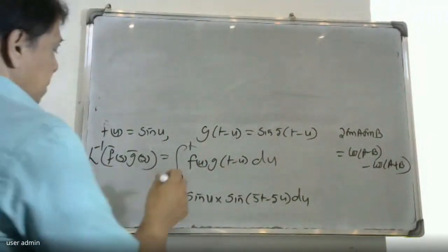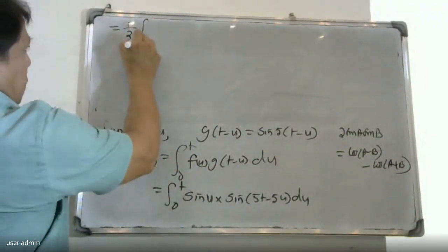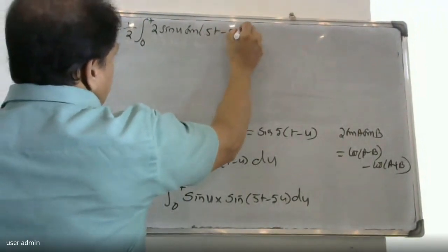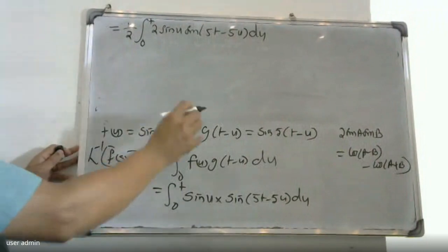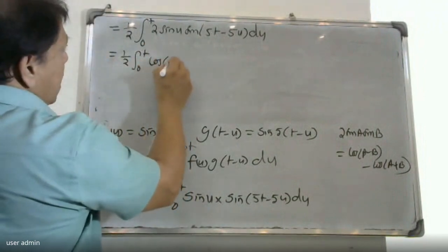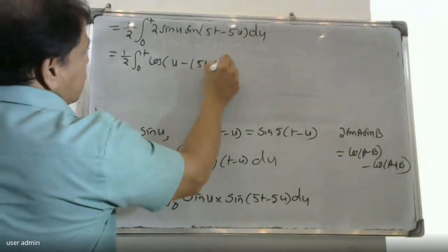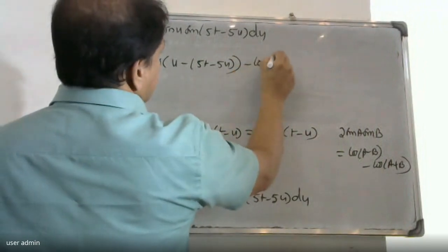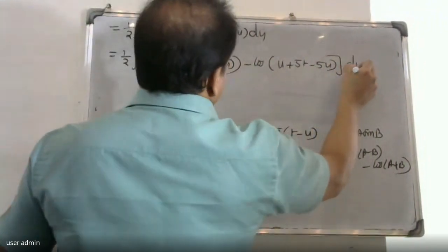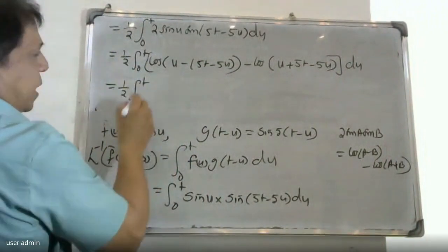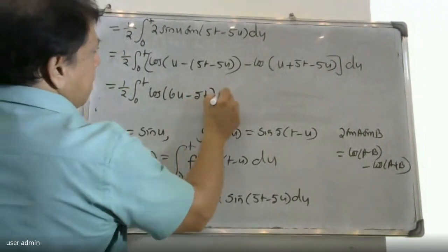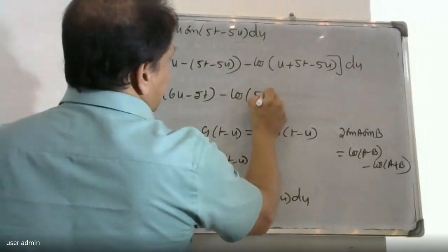That is equal to 1 by 2 into the integral from 0 to t of 2 sin(u) · sin(5t − 5u) dt, which by the identity becomes 1 by 2 into the integral from 0 to t of cos(u − 5t + 5u) minus cos(u + 5t − 5u) du.